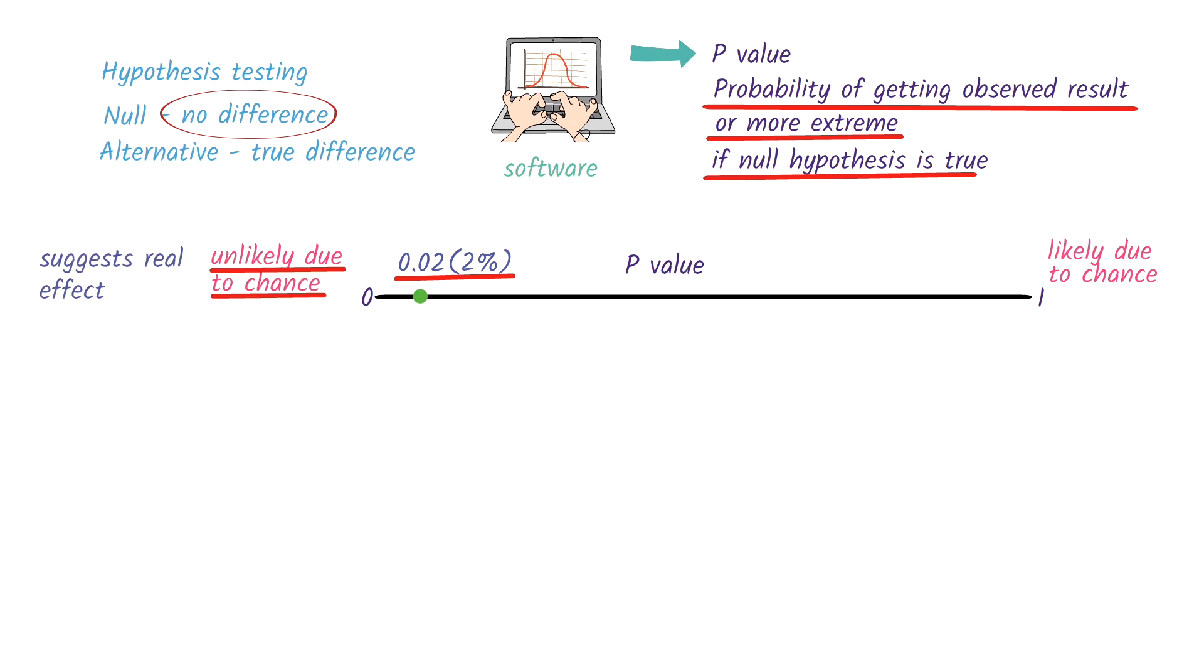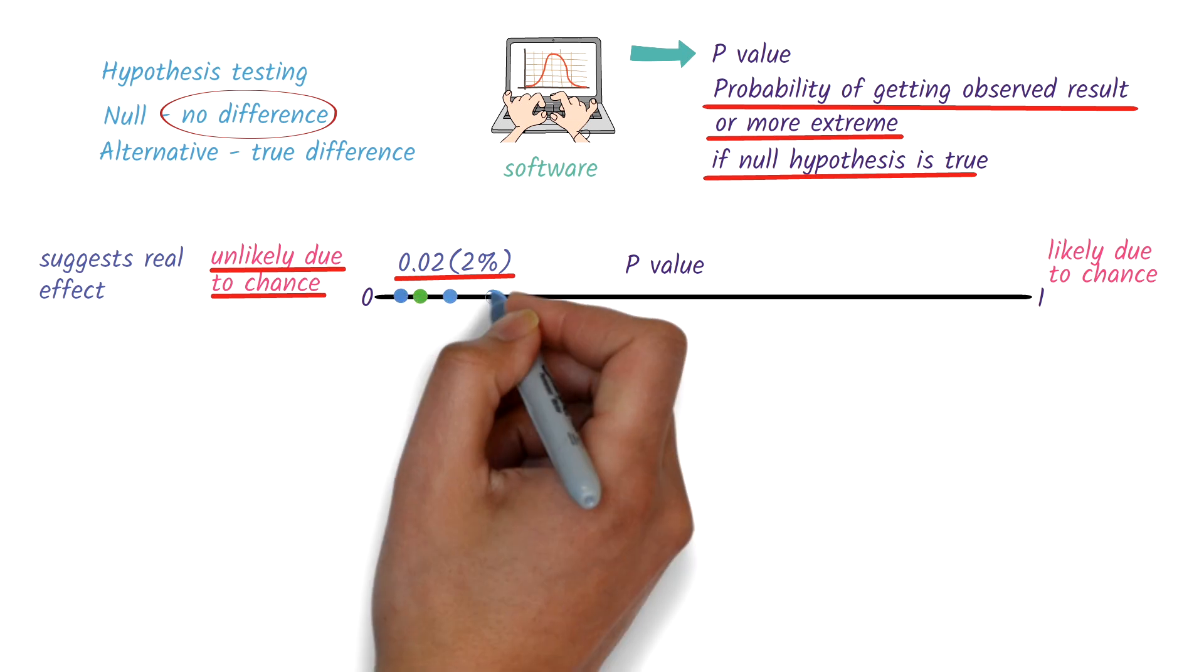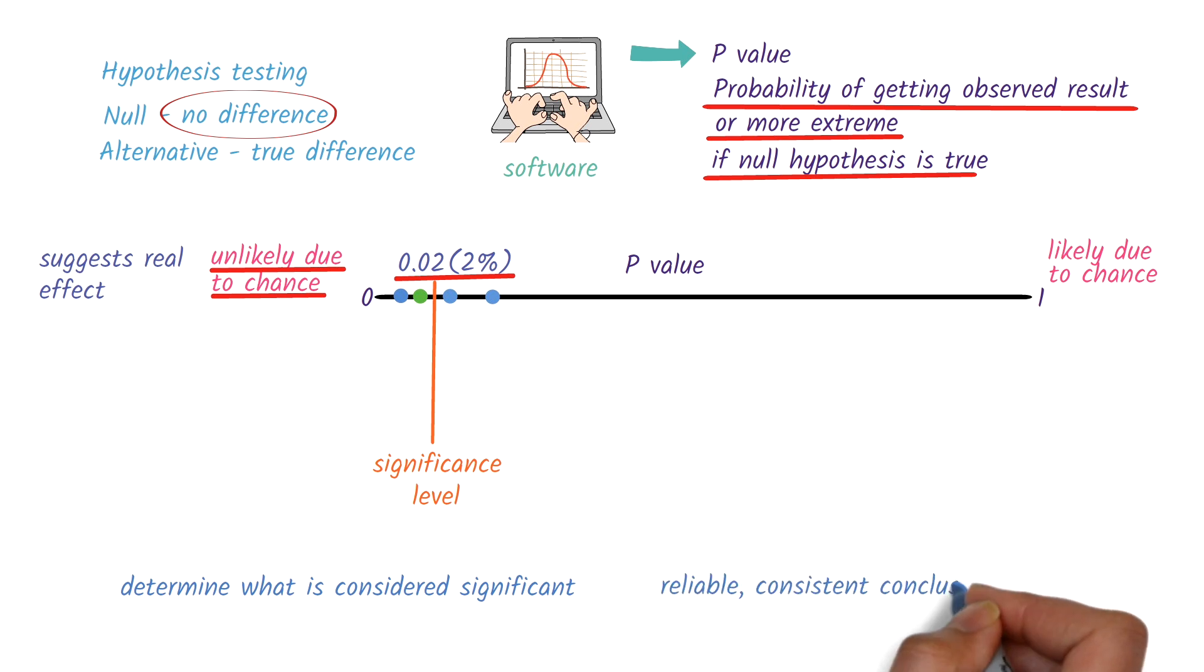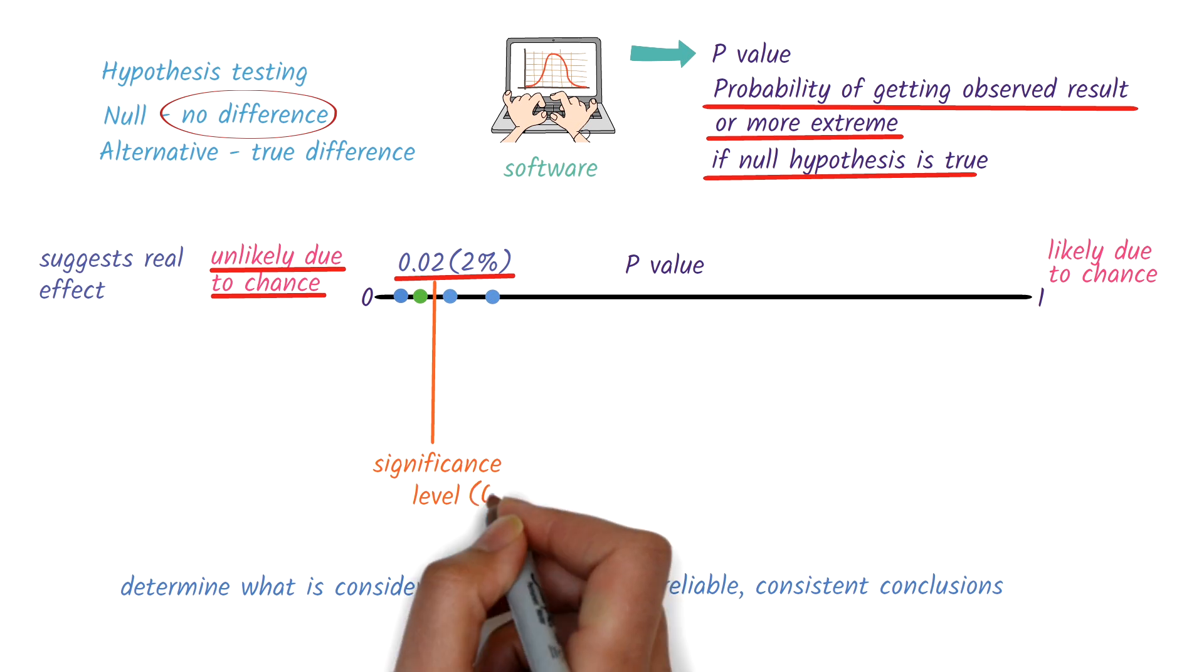So that's a good thing, right? But what if the p-value were 1%, 3%, or 5%? At what point do we decide the probability is small enough to treat the result as meaningful? This is why we need a cut-off, called the significance level. With a predefined cut-off, researchers can confidently determine what counts as significant, ensuring reliable and consistent conclusions. By convention, this cut-off is often set at 0.05, or 5%.